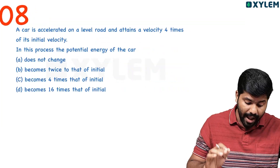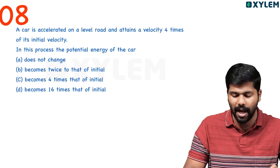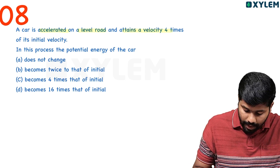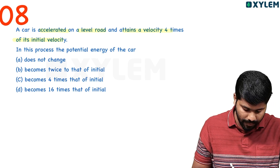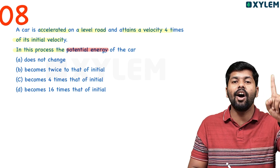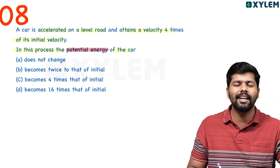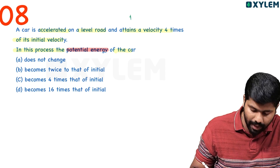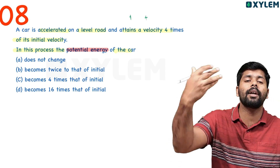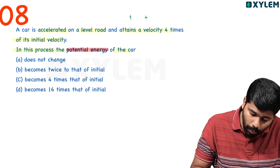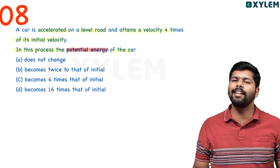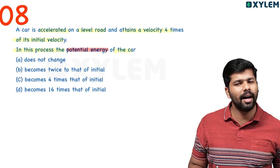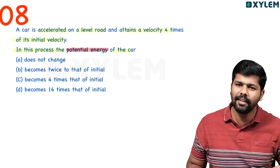We are moving to the 8th question. A car is accelerated on a level road and attains a velocity four times its initial velocity. In this process, is the energy kinetic or potential? If the initial velocity is v, the final velocity is 4 times the initial value. Kinetic energy is 0.5mv². On a level road, kinetic energy is 0.5mv².